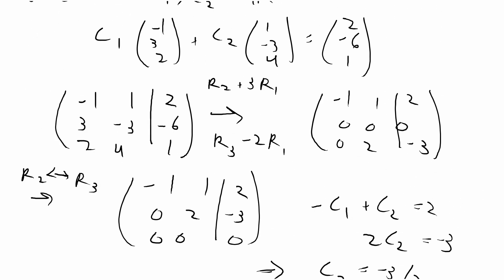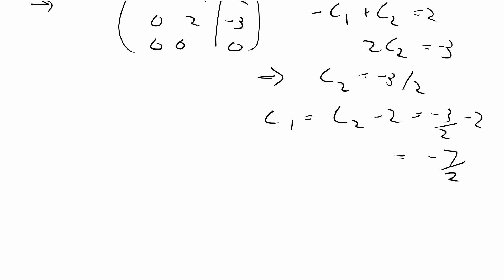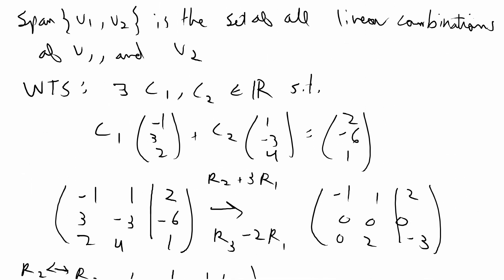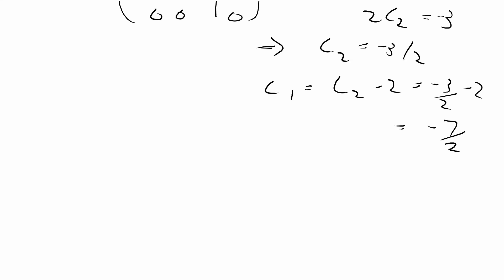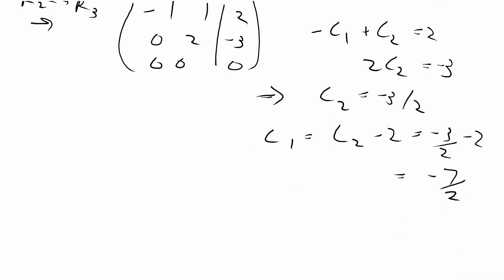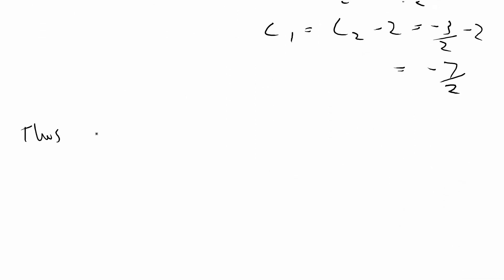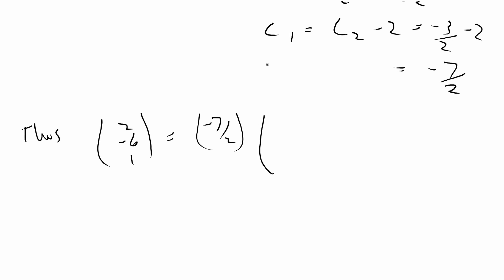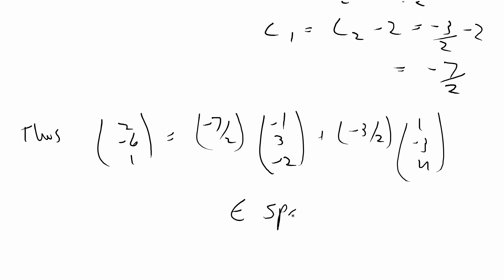The row echelon form of the matrix does have a solution and there are real solutions for c1 and c2. The linear system produces the scalars c1 = -7/2 and c2 = -3/2. Thus the vector (2, -6, 1) equals (-7/2)·(-1, 3, -2) plus (-3/2)·(1, -3, 4), which confirms it belongs to the span of v1 and v2.